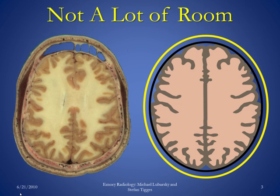Here is some anatomy. You can see the brain inside of the skull. As you can see, there is not a lot of space within the skull that is not occupied by the brain. That space is primarily occupied by cerebrospinal fluid and some vasculature such as dural venous sinuses.